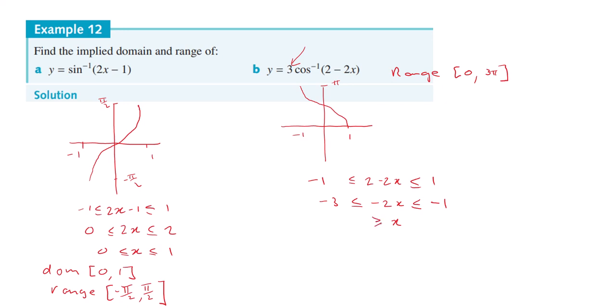So that becomes -3 divided by -2 is 3/2. Reverse the sign. -1 divided by -2 is 1/2.